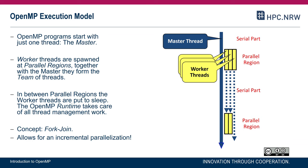Thread management is completely done by the OpenMP runtime. However, it is your responsibility as a programmer to express the parallelism, and then the compiler plus the OpenMP runtime take care of the exploitation. OpenMP, as a sequence of parallel regions, implements a so-called fork-join concept: when threads are created we have a fork, and at the end of a parallel region we have a join, meaning the program continues sequentially.